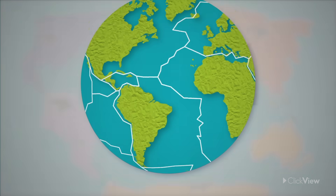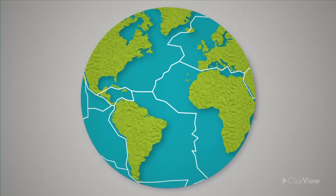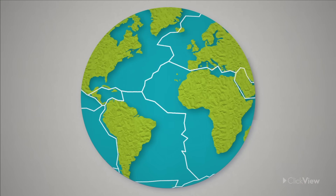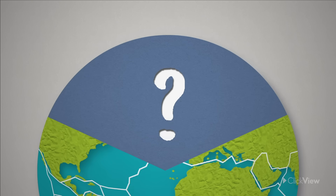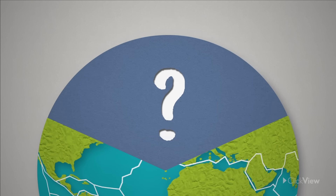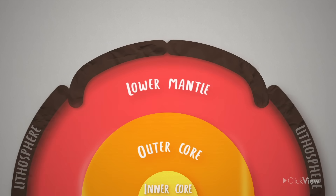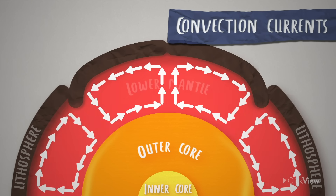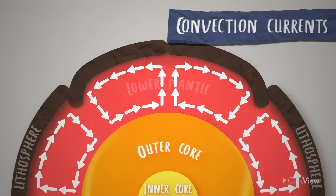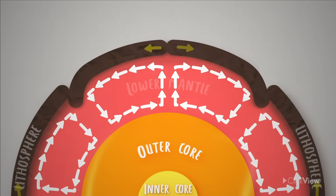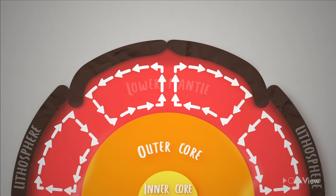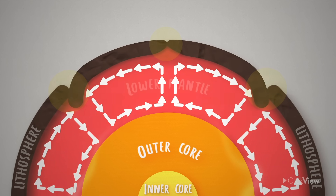So how did the plates manage to move the continents to where they are today? To find out, we'll have to look at what lies under the plates. Within the earth there is tremendous heat and pressure, and this drives slow circular movements called convection currents within the mantle layer, which in turn cause the plates to move.